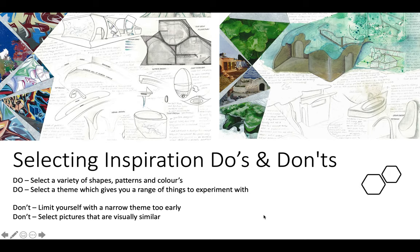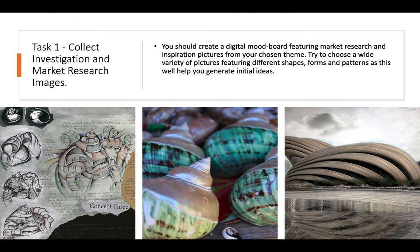What not to do: don't limit yourself with a narrow theme too early. Try and collect a variety of images and don't select pictures that are visually similar — so if you've chosen nature, there would be no point in having five different pictures of leaves. You're going to make a visual mood board digitally using PowerPoint, featuring investigation images and market research images from your chosen theme. Here's an example of an investigation image which helped this person come up with their shell-themed building, and here is a shell-themed building in the real world as market research.